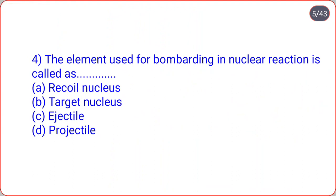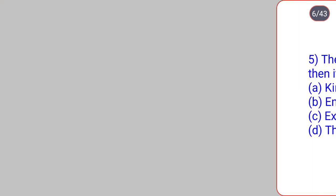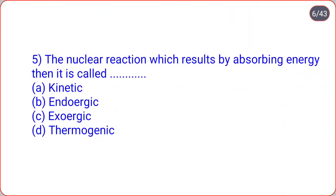The next: the element used for bombarding in nuclear reaction is called as? Options are recoil nucleus, target nucleus, ejectile, projectile. So correct option is option D, that is projectile.